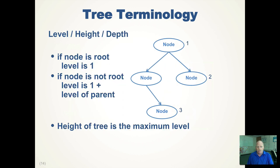We can talk about the level of a node in the tree using a recursive definition. If the node is the root, then its level is one. Otherwise, the level is one plus the level of the parent. So the root is level one, all its children are level two, all their children are level three. The height of a tree is the maximal level — in this case the tree has a height of three.